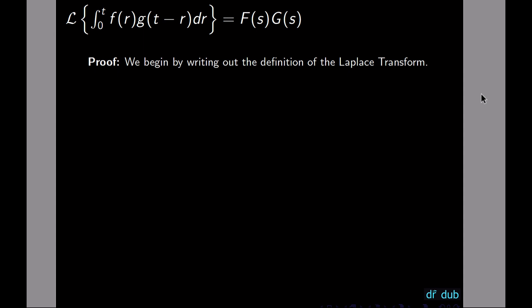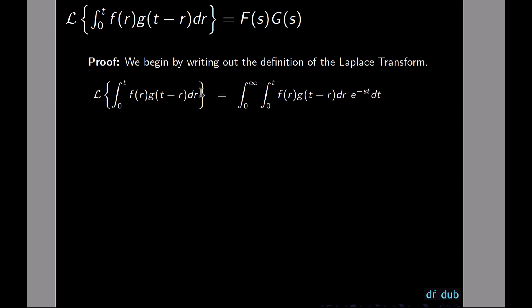First, we start out by writing the Laplace transform definition inside that integral. The Laplace transform of the convolution would be the integral from 0 to infinity of whatever we're taking the Laplace transform of, multiplied by e to the negative st, and then we integrate that dt.